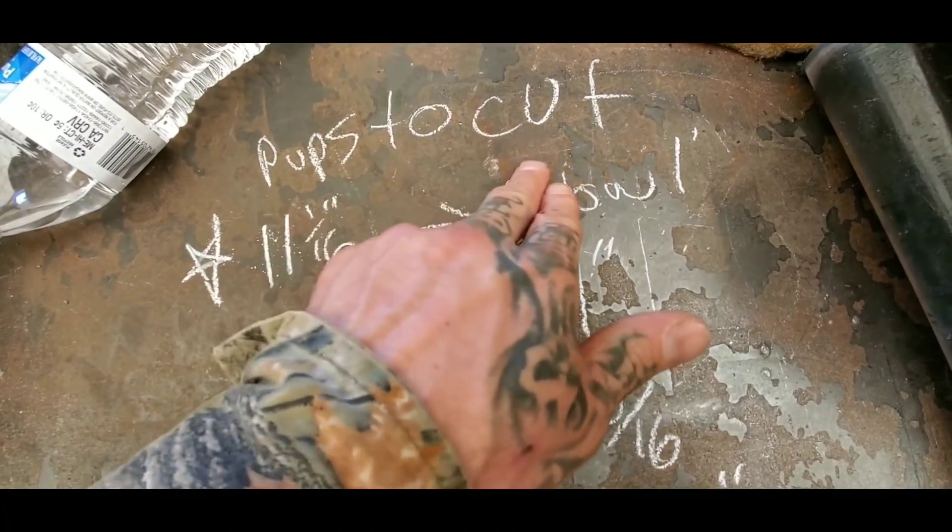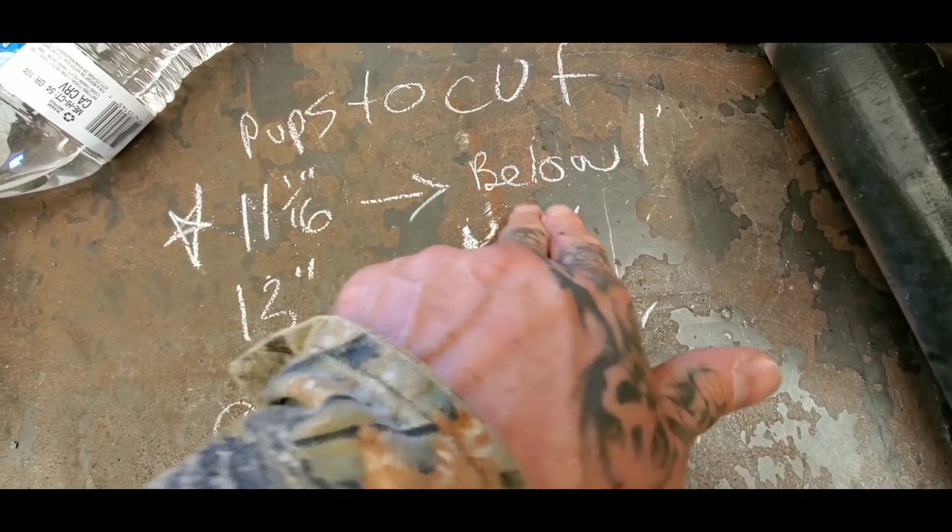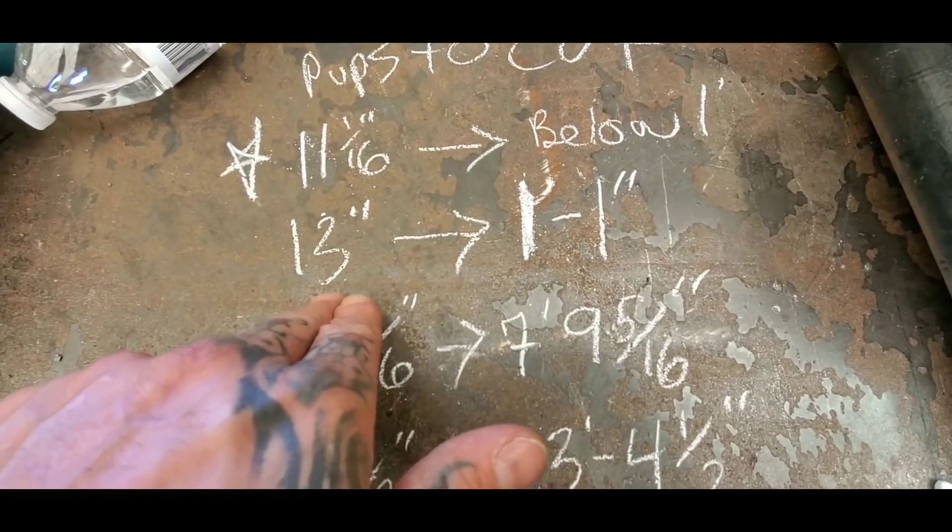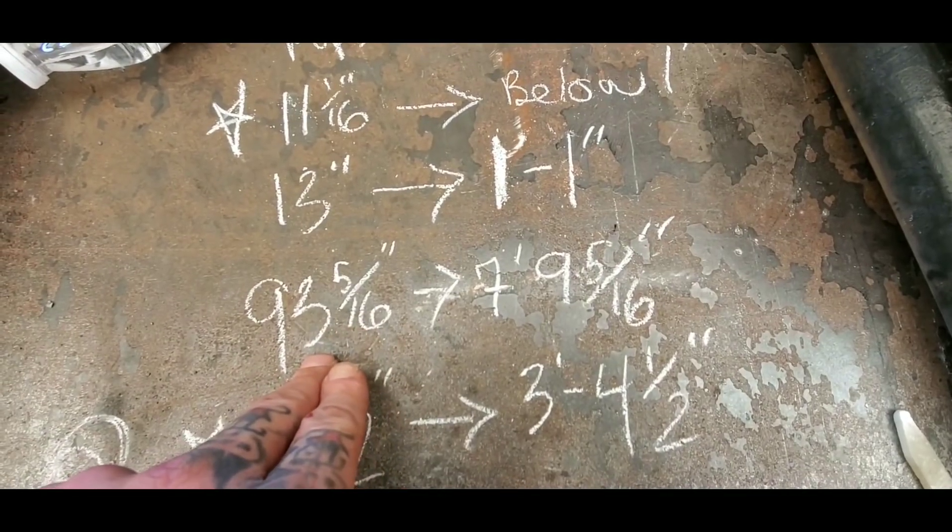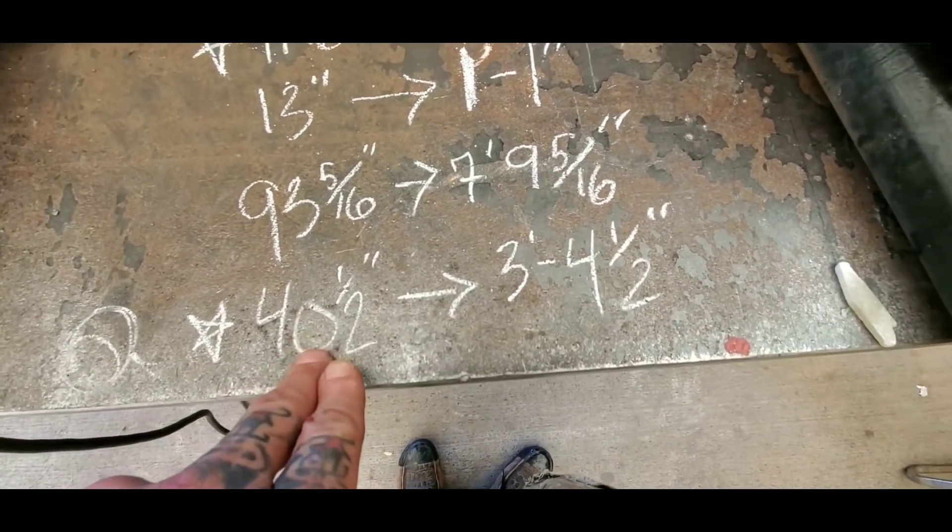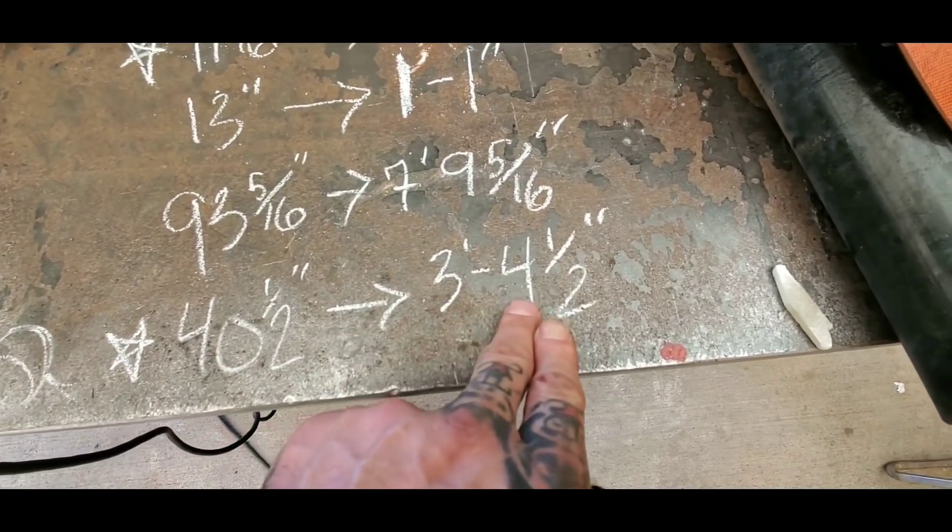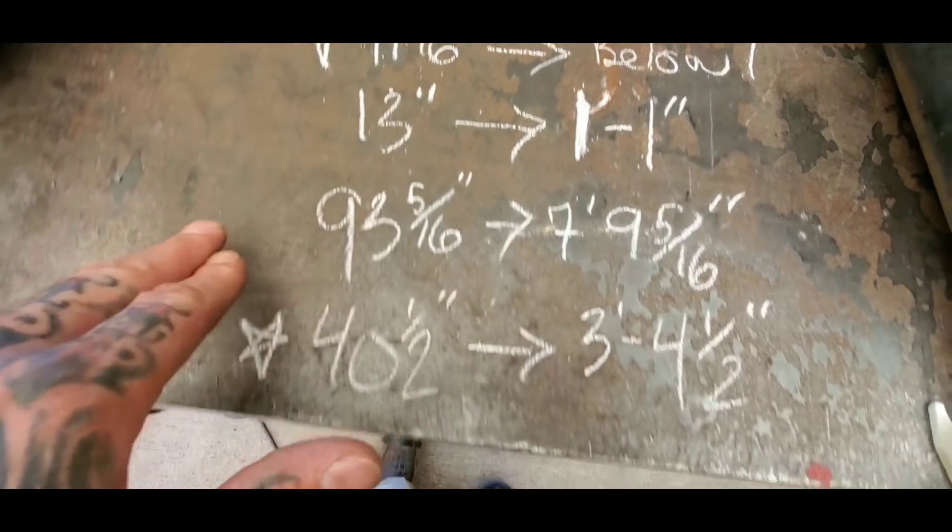These are pups to cut, this is just some examples here to convert from inches to feet. 11 inches and 1/16th below a foot stays that. 13 inches is an example, it's one foot one inch. 93 inches and 5/16th converted to feet is 7 feet 9 inches and 5/16th. 40 and a half inches converted to feet is 3 feet 4 and a half inches.